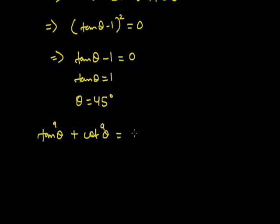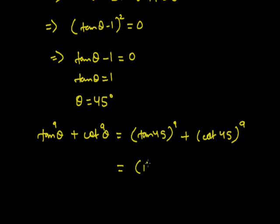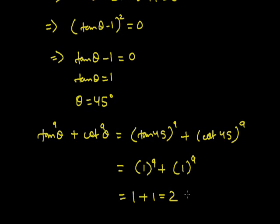Substituting θ = 45°: tan⁹45° + cot⁹45° = 1⁹ + 1⁹ = 1 + 1 = 2, since tan45° = 1 and cot45° = 1. So the answer is 2. In this way we need to solve questions based on trigonometry.